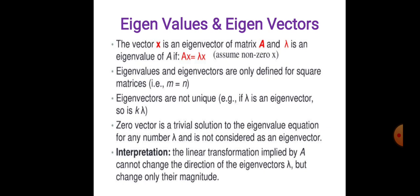Eigenvalues and eigenvectors are only defined for square matrices, where M equals M. Eigenvectors are not unique — if lambda is an eigenvalue, so is K times lambda. The zero vector is a trivial solution to the eigenvalue equation for any lambda and is not considered an eigenvector. The linear transformation implied by A cannot change the direction of the eigenvectors, only their magnitude.